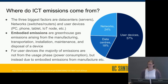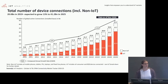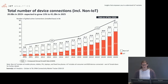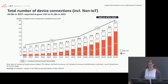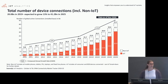Embodied emissions are greenhouse gas emissions arising from the manufacturing, transportation, installation, maintenance, and disposal of a device. This is particularly concerning because the number of IoT devices in the world is projected to triple compared to 2020 numbers in just three years, reaching more than three IoT devices per person globally. Since we work on sensors and embedded systems — the bread and butter of IoT — the work that we do has real impact on the environment.